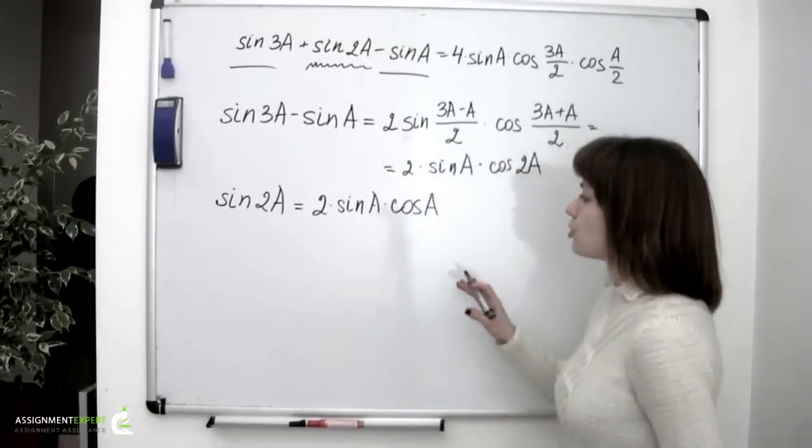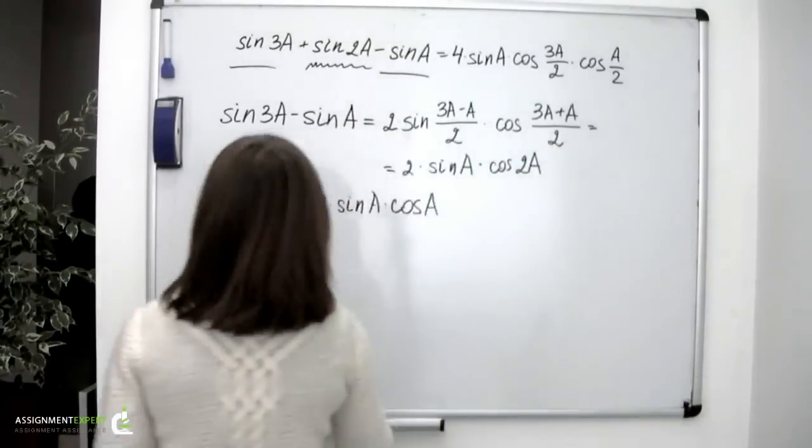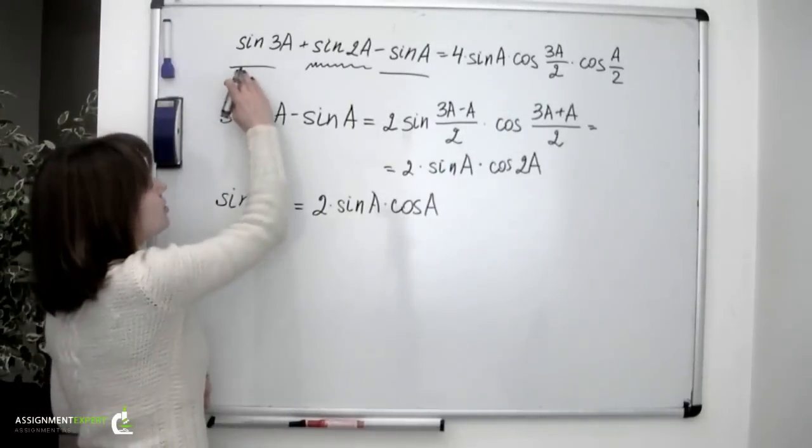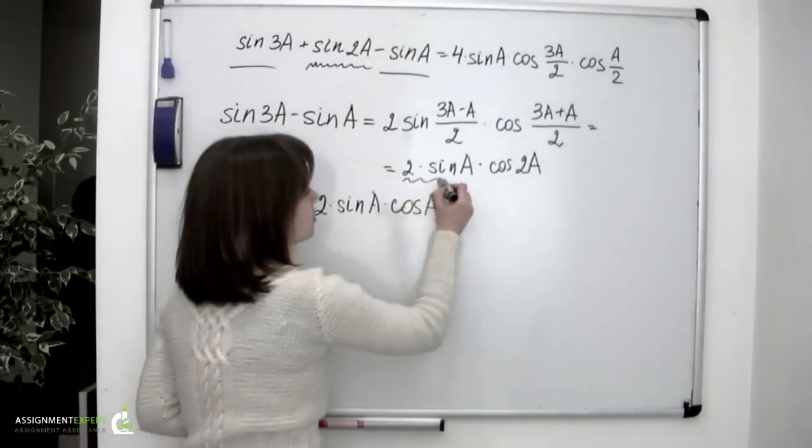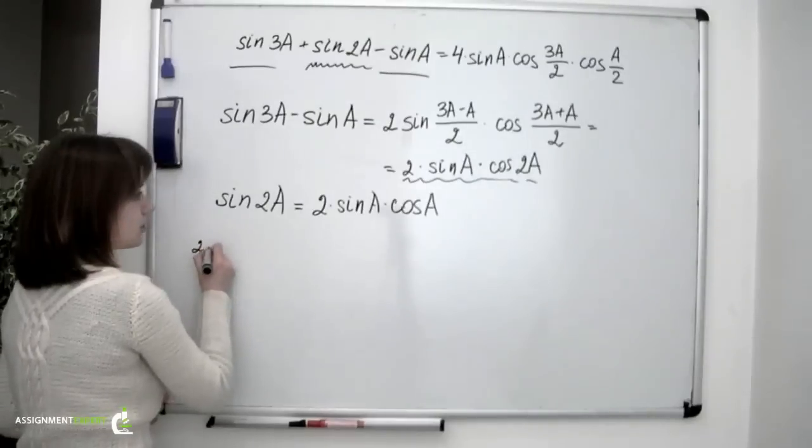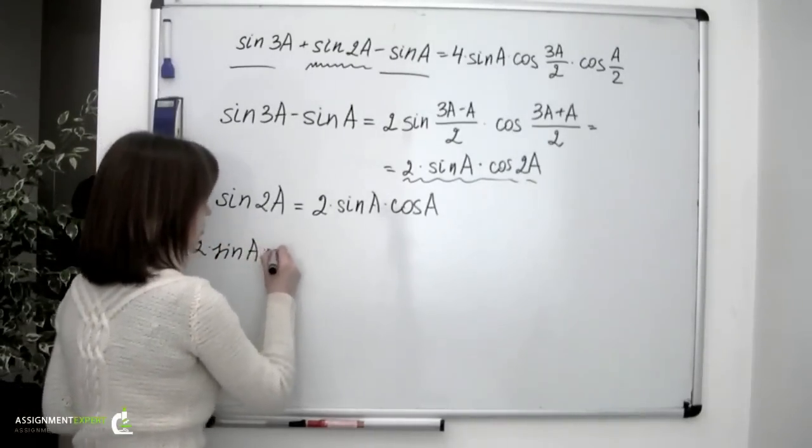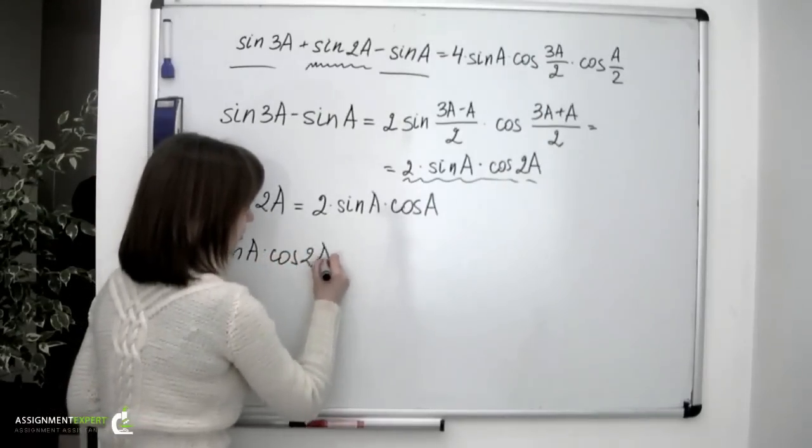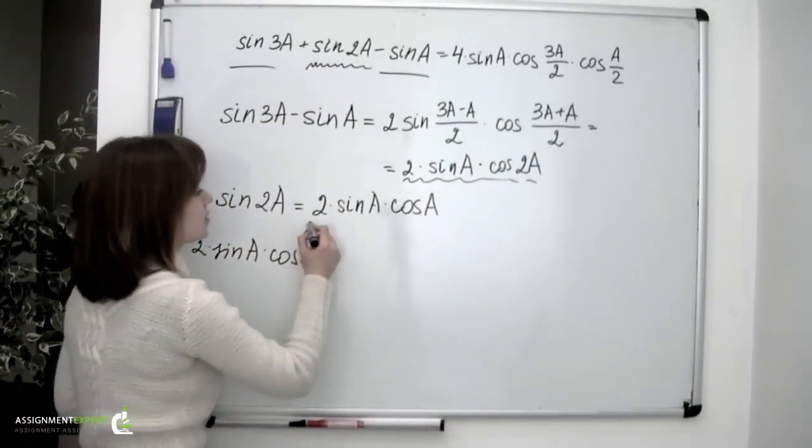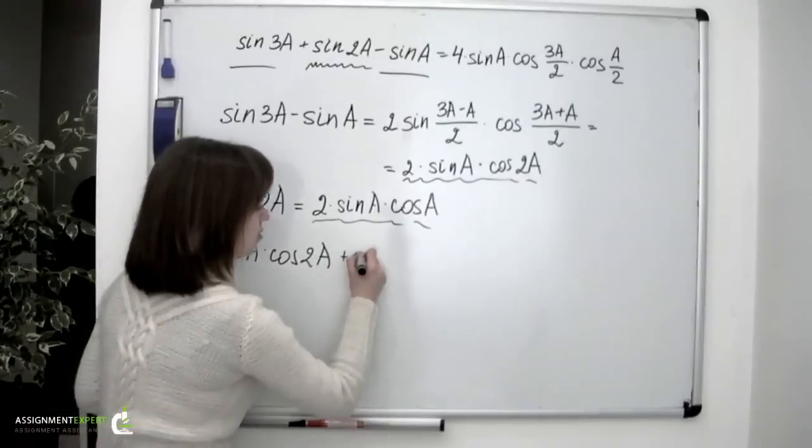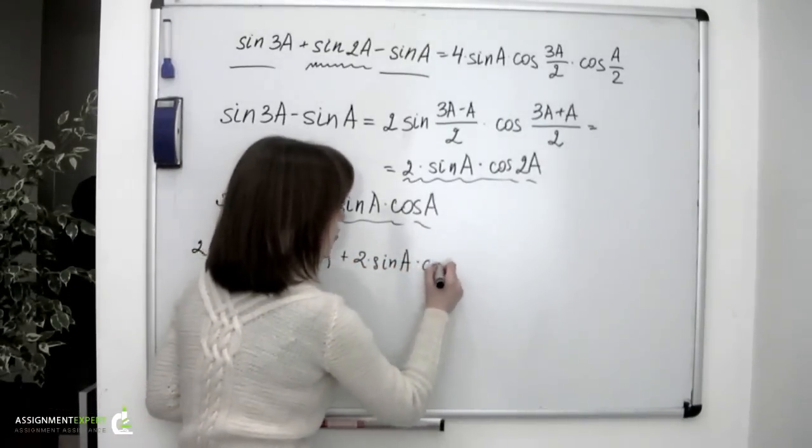Let's now substitute these newly obtained expressions into the initial one and see where it leads us to. So instead of writing sin 3a minus sin a, we are going to write this expression 2 times sin a times cos 2a. And instead of writing sin 2a, we will write this expression plus 2 times sin a times cos a.